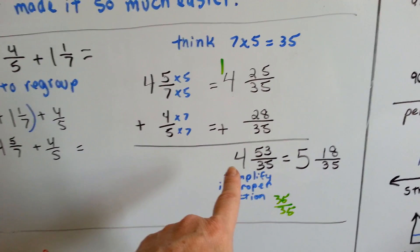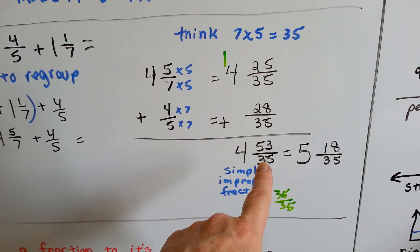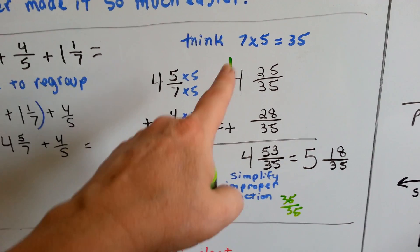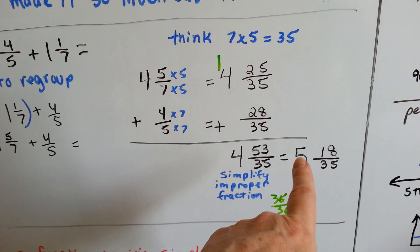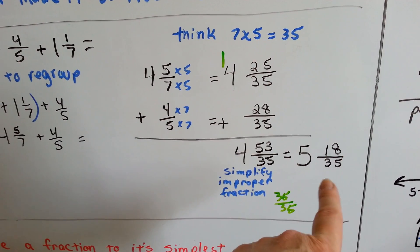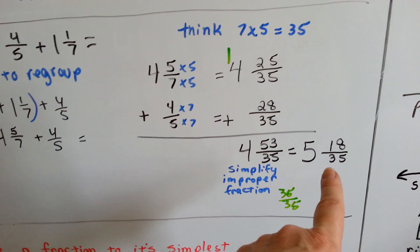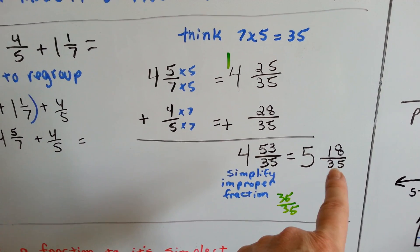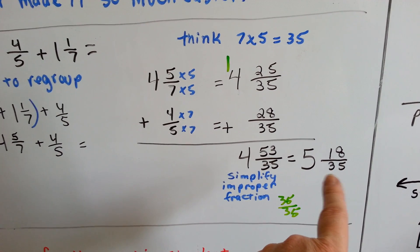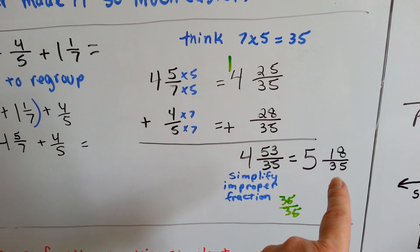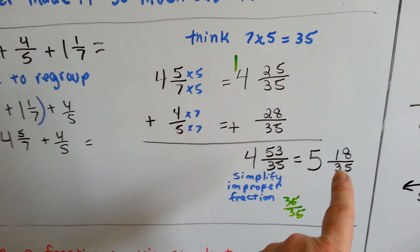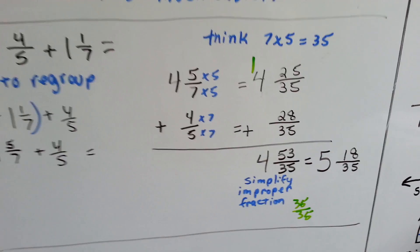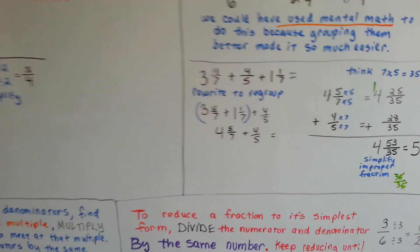35 from 53 is 18; we add the 4 and the 1 and get 5, giving us 5 and 18 thirty-fifths. This is as low as it'll go because there's no number — 9, 8, 7, 6, 5, 4, 3, or 2 — that will evenly divide into both. So 18 thirty-fifths is as small as it'll go.